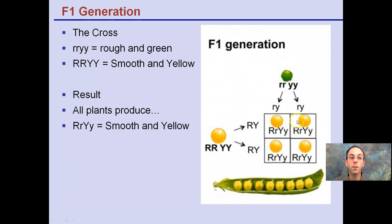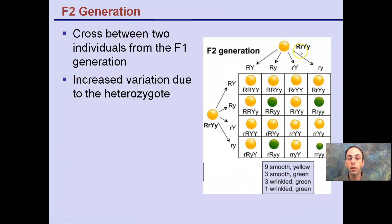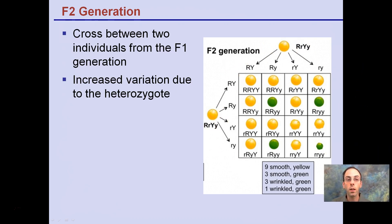Now we're looking at taking these individuals and crossing them together in the F2 generation. Here is our heterozygous and heterozygous crossing those together. This is our resulting offspring.